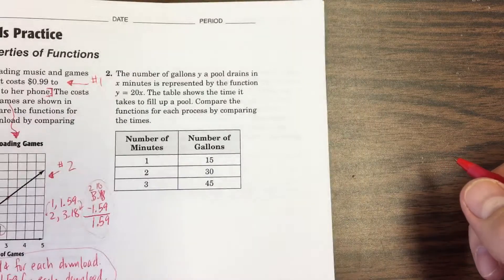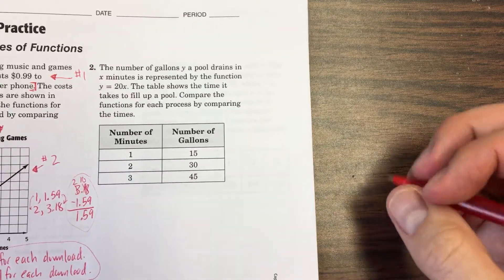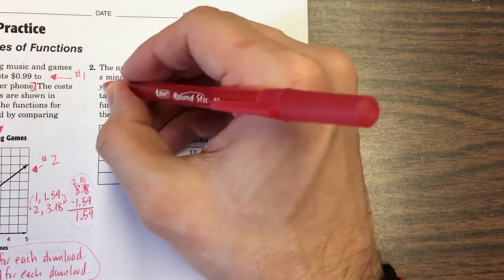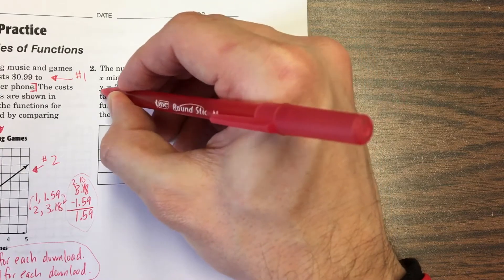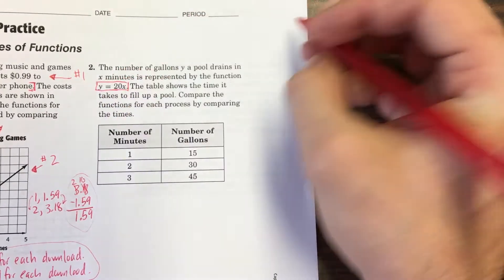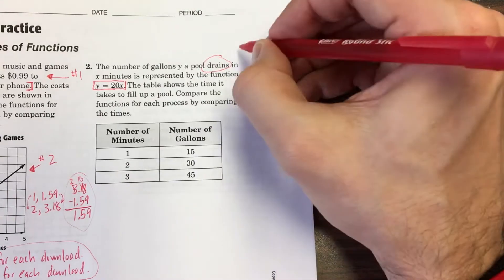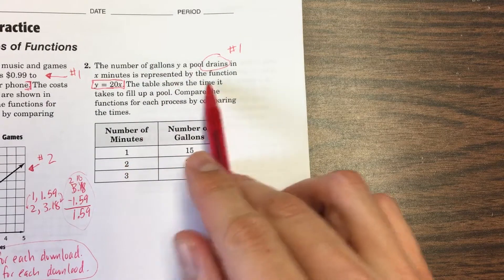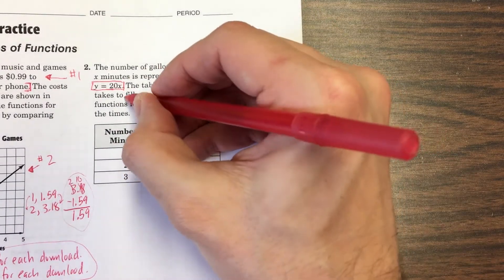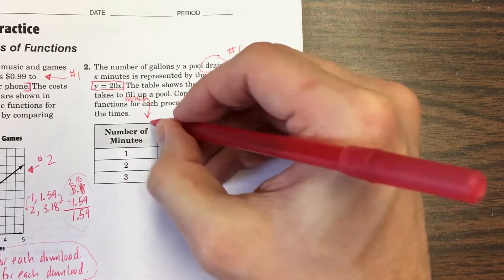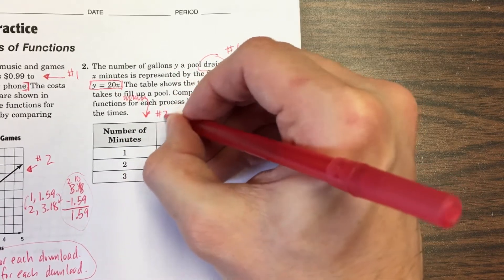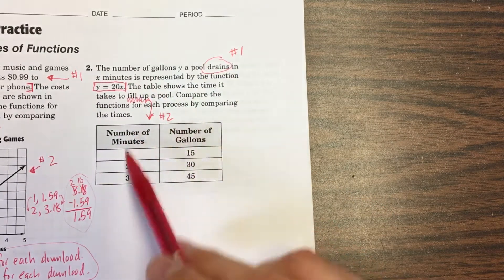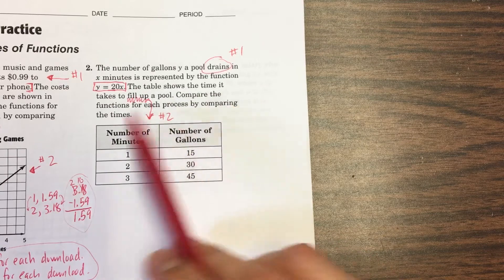Perfect. Number two, the number of gallons, y, that a pool drains in x minutes is represented by the function y equals 20x. Okay, so this is situation number one. This is your pool draining. Draining is situation number one. The table down here shows the time it takes to fill up. So this is filling it up, situation number two. So situation number one is the equation. Situation number two is the table. Compare the functions for each process by comparing the times.